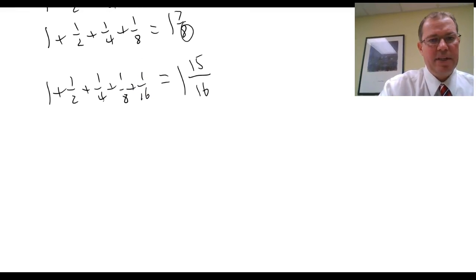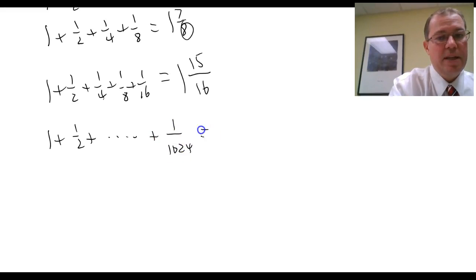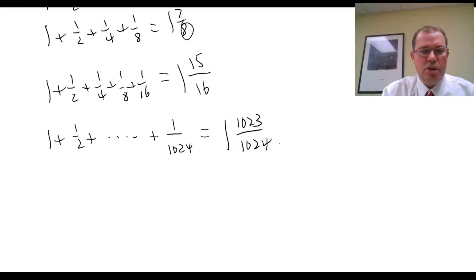So then she kind of extended it and played with it, and she thought, well if I had 1 plus a half plus dot dot dot, imagine if I go up to 1 over 1024, then the answer should be 1 and 1023 over 1024. So she was thinking,